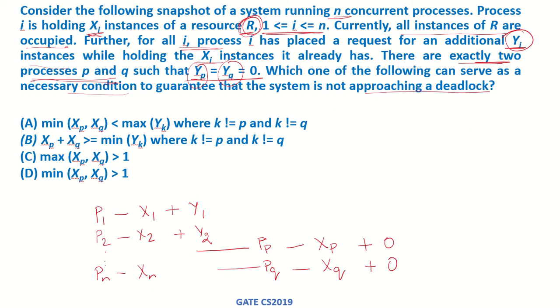Now if we look at process p, it does not require any more resources. It already has what it requires. So process p can run and release its resources which are xp. Similarly process q already has xq instances of r, it does not require any more instances. So process q can also run and release its xq resources.